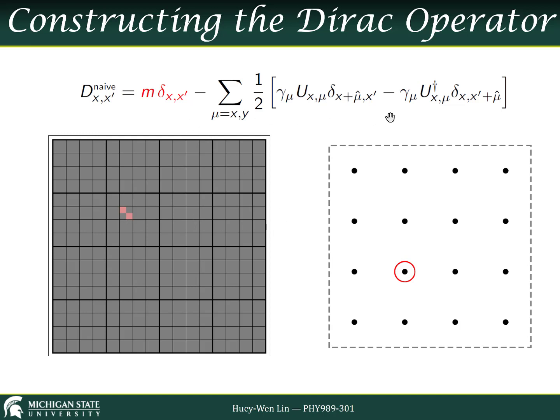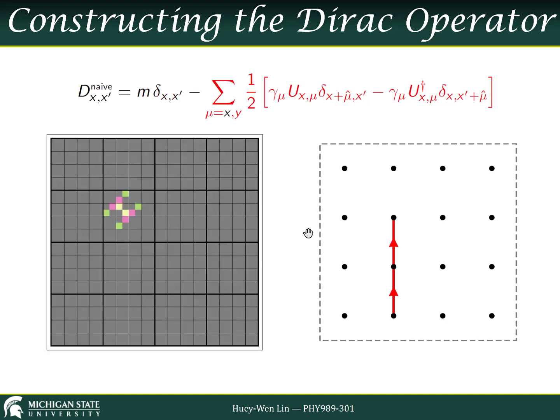The remainder of this operator represents the kinetic term, the derivative, the interaction between this site and other sites. The first part is the derivative with respect to this first dimension, y-dimension as we show it here. And this is represented by the interaction between this point and its neighbor in the forward direction, and between this point and its neighbor in the backwards direction.